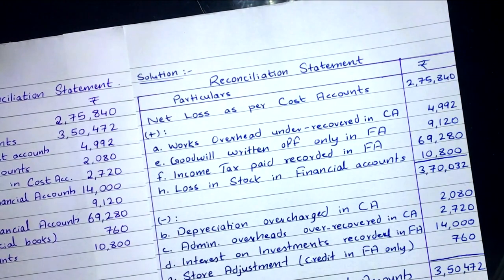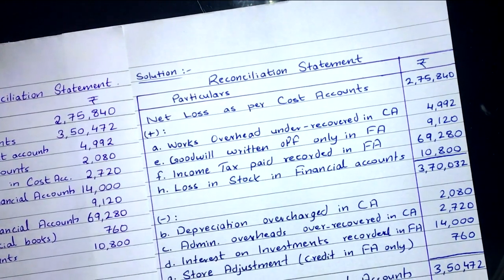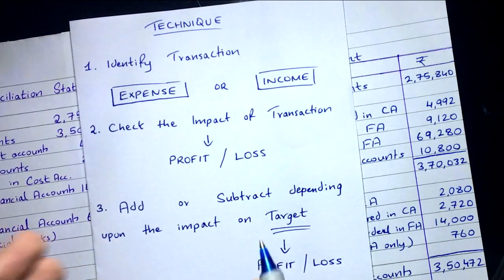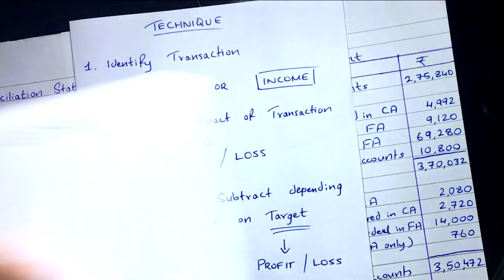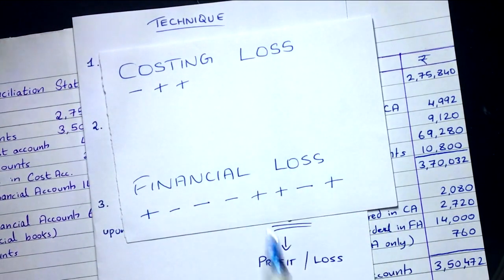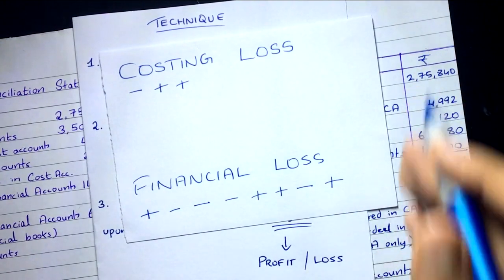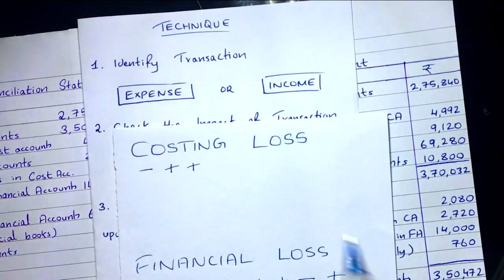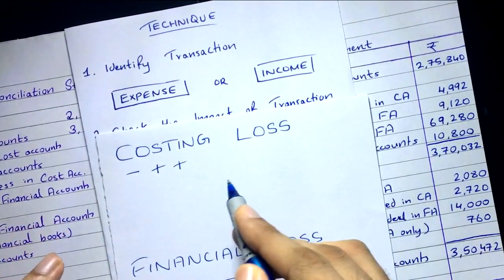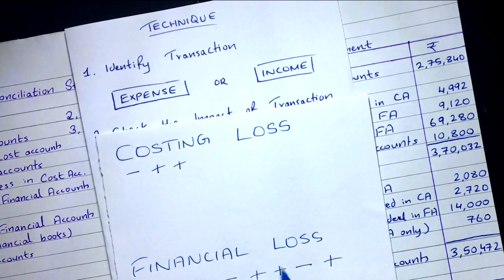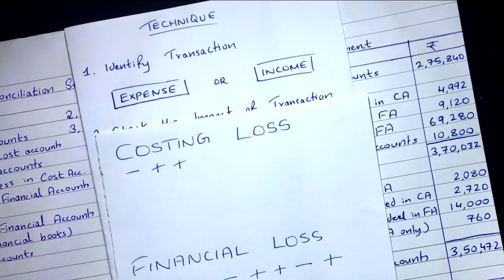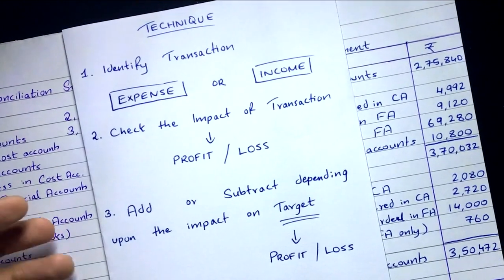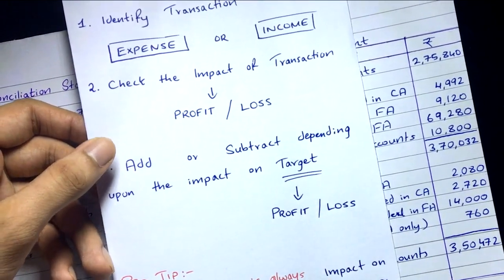The only thing you have to understand is this: identify the transaction as expense or income, then check the impact. If you can get the impact directly on financial loss, it's straightforward — just do plus or minus. If the question mentions cost accounts, first get the impact on costing loss, then do the opposite for financial loss. Whatever impact is there on target profit or loss, that's exactly what you do.